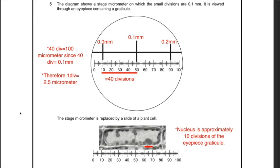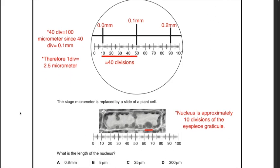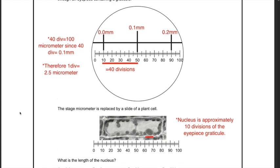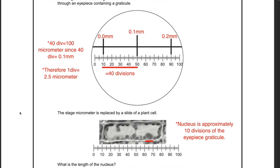The first question: the diagram shows a stage micrometer on which the small divisions are 0.1 millimeter, viewed with an eyepiece containing a graticule. The stage micrometer is replaced by a slide of a plant cell. What is the length of the nucleus? I have marked in red the nucleus of this plant cell, and the nucleus is approximately 10 divisions of the eyepiece graticule. To find the length, we first have to calibrate the stage micrometer and the eyepiece graticule.